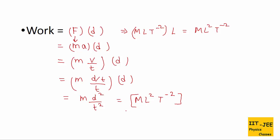The SI unit of work is Joule. From the formula, unit of force is Newton and distance is meter, giving Newton meter as another unit of work. From the dimensional formula, for mass it is kg and for distance it is meter squared, and for time the unit is second.